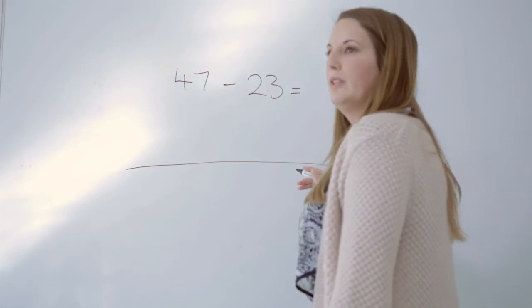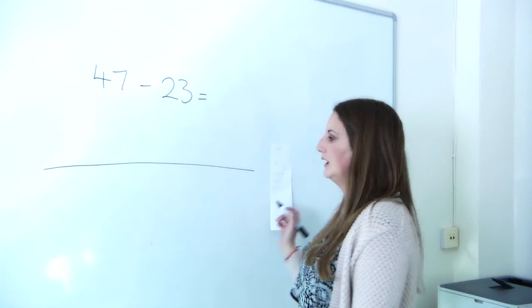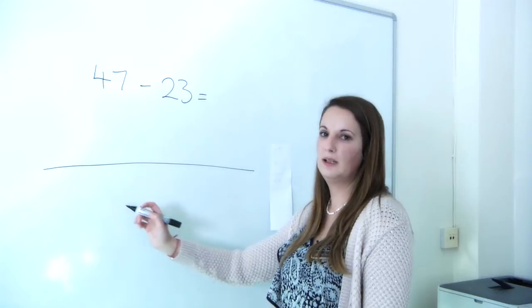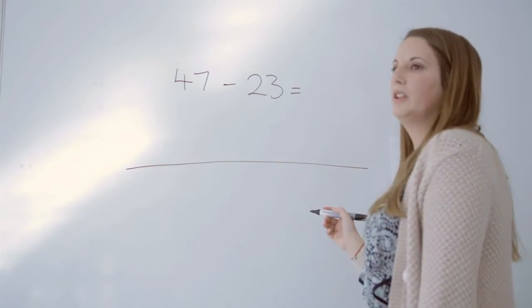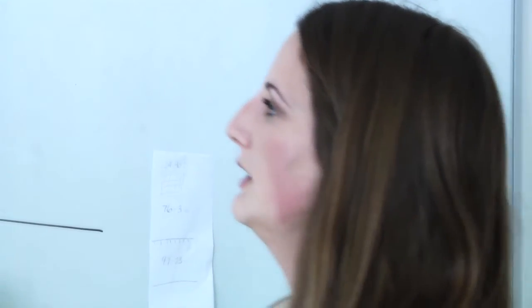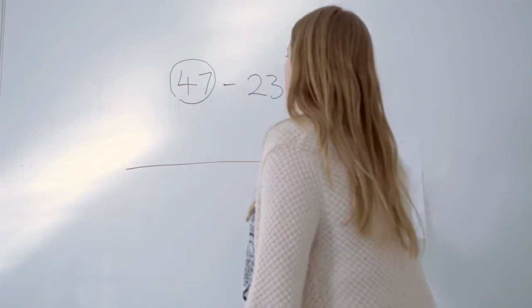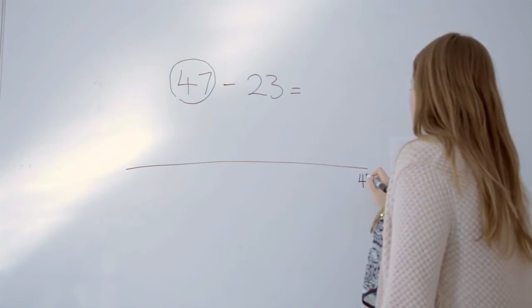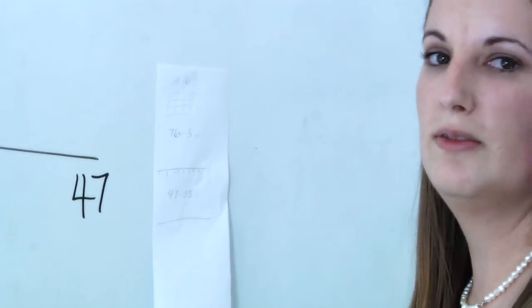Children move on from using a numbered number line to using a blank number line. Now here children have started to learn a lot more about place value and where the numbers sit. So again, they start from the number they're taking away from and write it at this end of the number line.